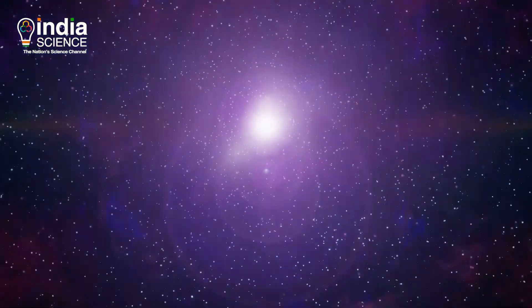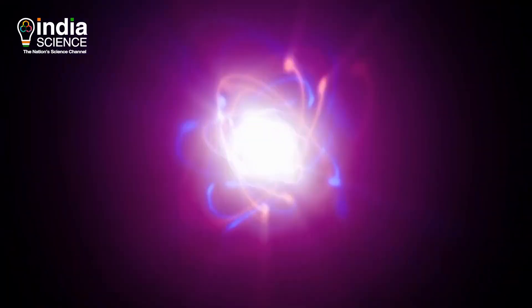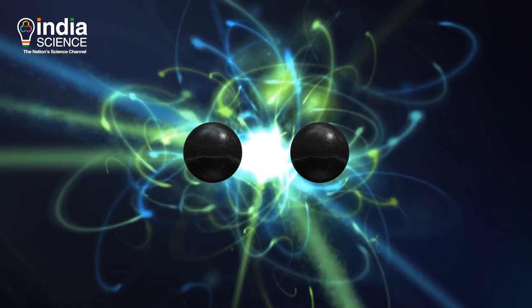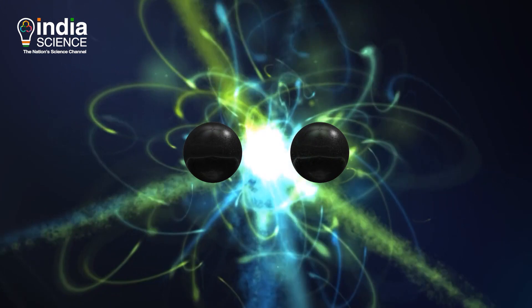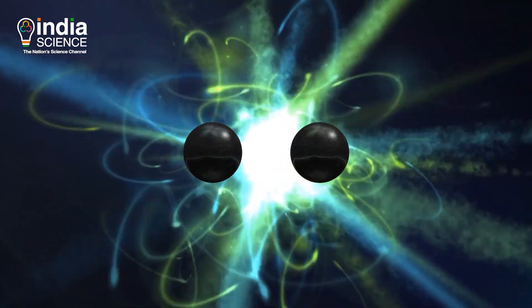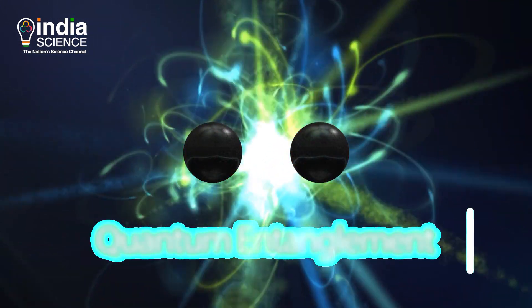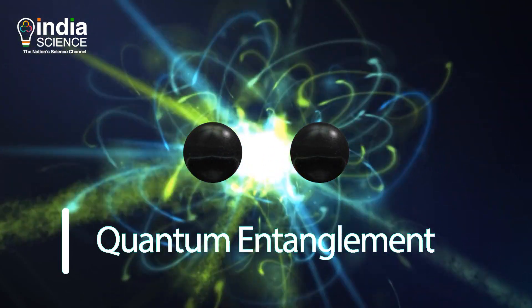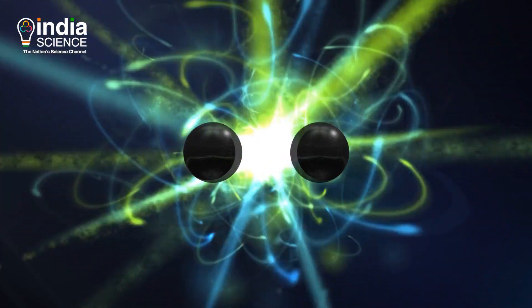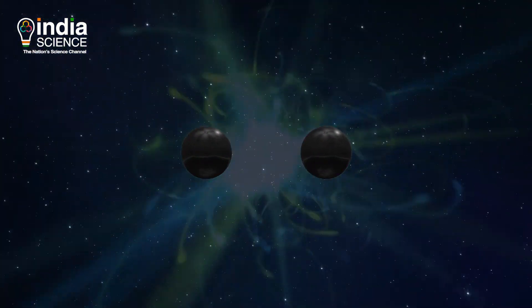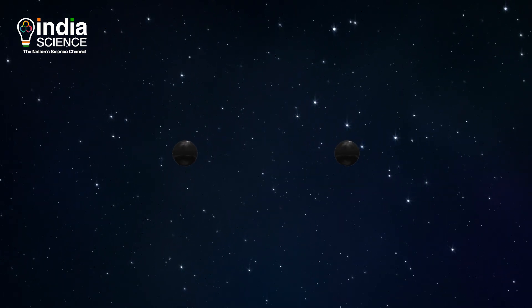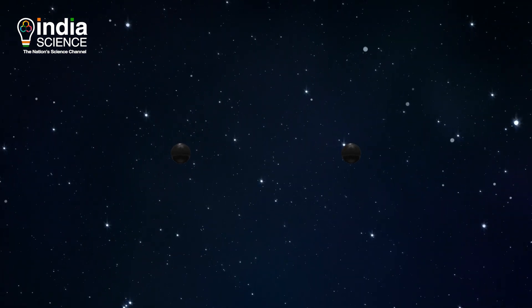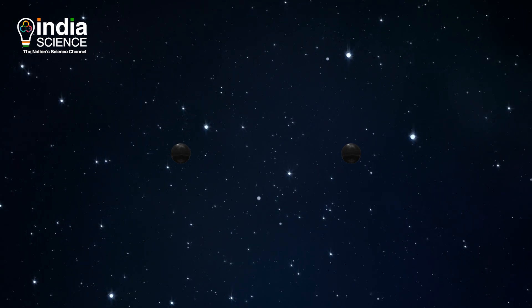Along with this, even subatomic particles can travel faster than light. If we have two electrons close together, they can vibrate in unison. This is called quantum entanglement, which means that two particles are entangled with each other. Now if we take these two particles apart, like thousands of light years apart, they will still vibrate in unison.